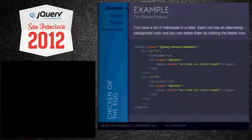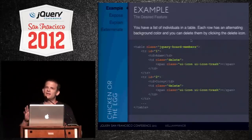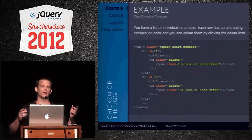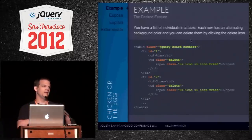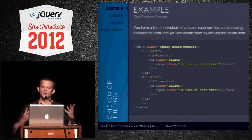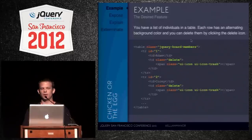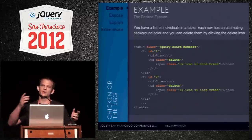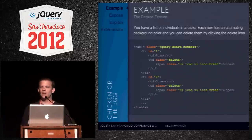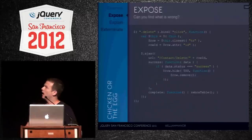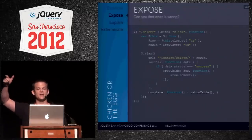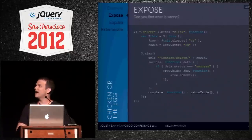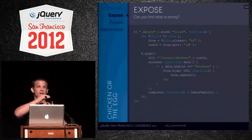Here's the actual example. We have a table of jQuery board members — each row is a board member. This was real code a friend of mine sent me. He had a delete button next to each item. When he clicked delete, he wanted to grab the closest row, go up the DOM, find the ID attribute, and make an Ajax call to his backend server to delete that particular item from his database.